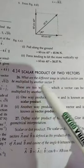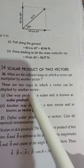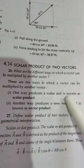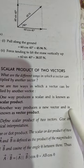Now we will study the scalar product of two vectors. What are the different ways in which a vector can be multiplied by another vector? One way produces a scalar and is known as the scalar product. Another way produces a new vector and is known as the vector product.